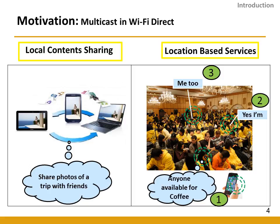Multicast is the communication of one sender to a group of receivers in order to transmit the same contents to all receivers at the same time. A number of applications emerge from multicast in Wi-Fi Direct. We present two use cases as our motivation. The first is where friends on a trip share photos using multicast on Wi-Fi Direct. The second is a conference scenario where people find relevant groups using a local multicast application.